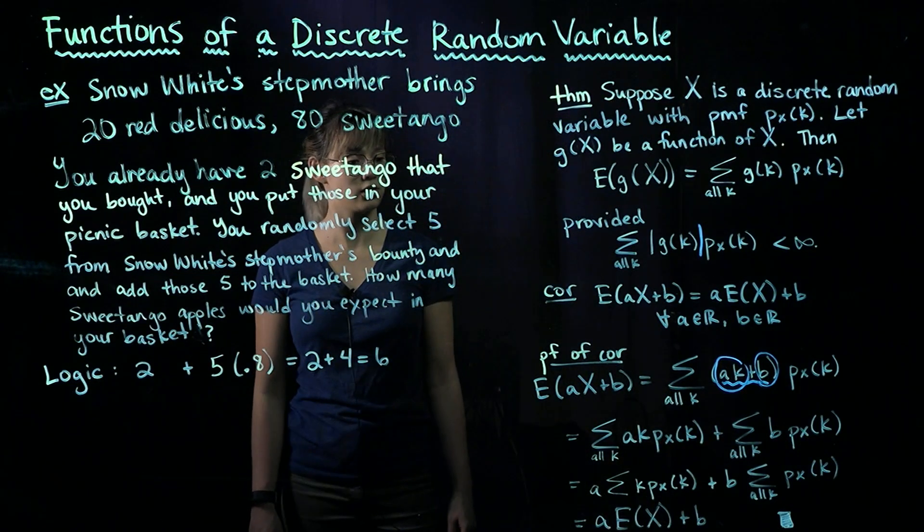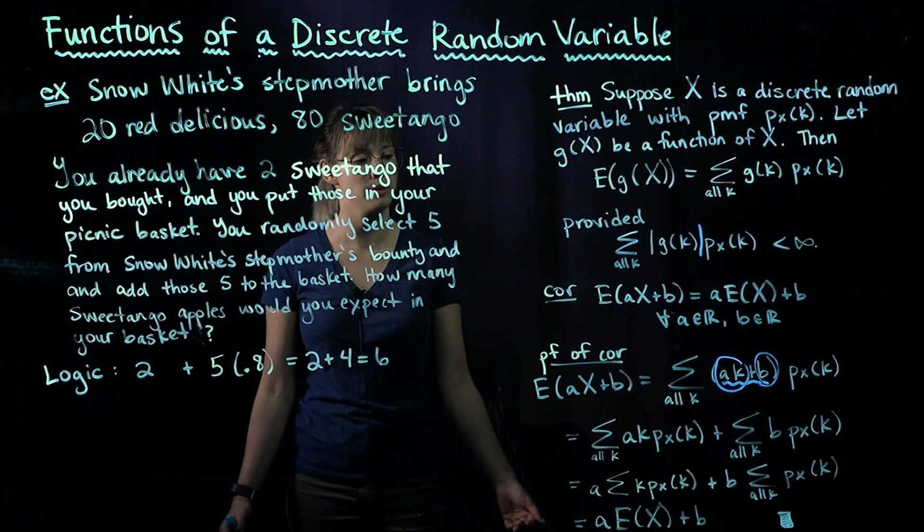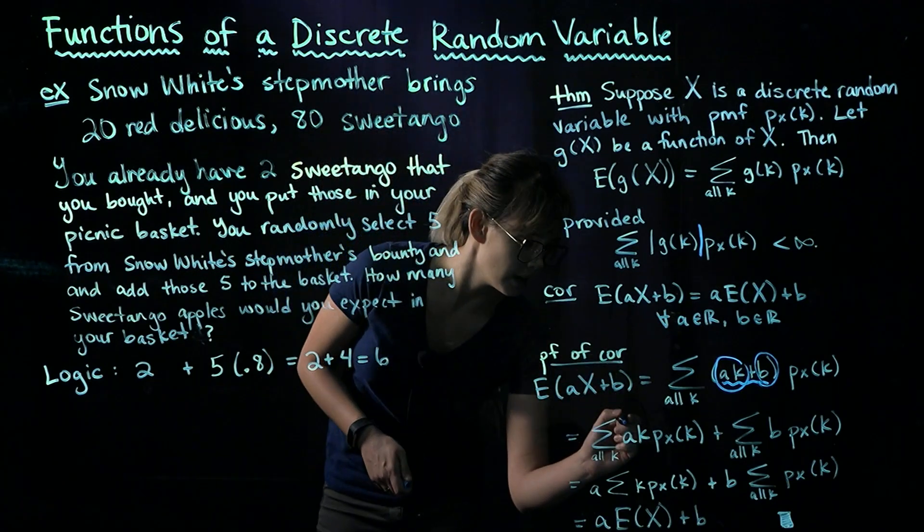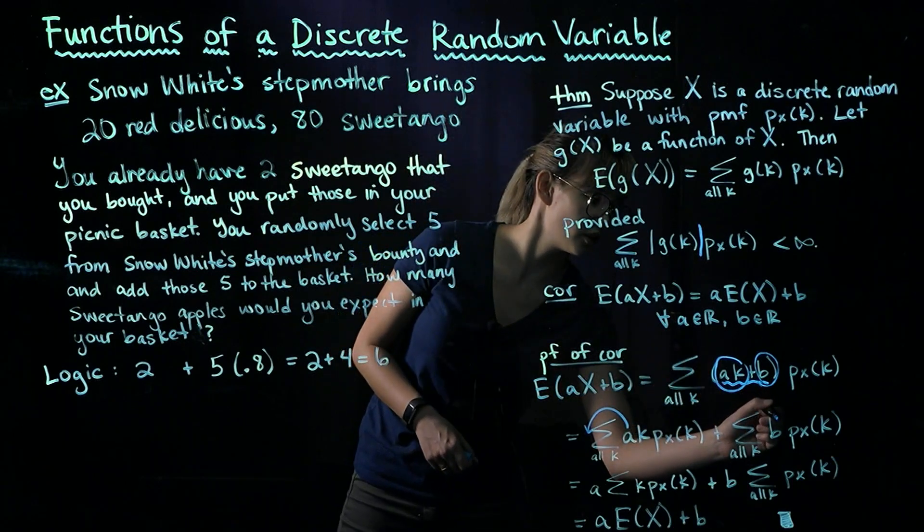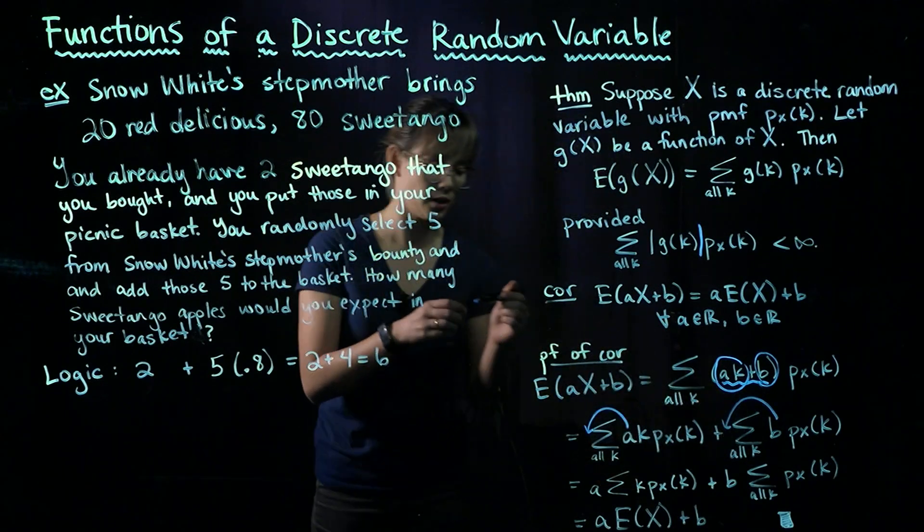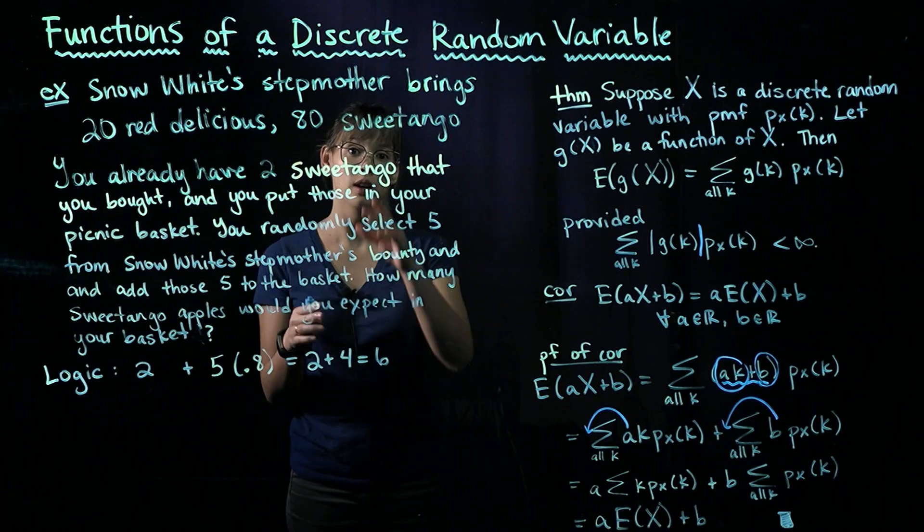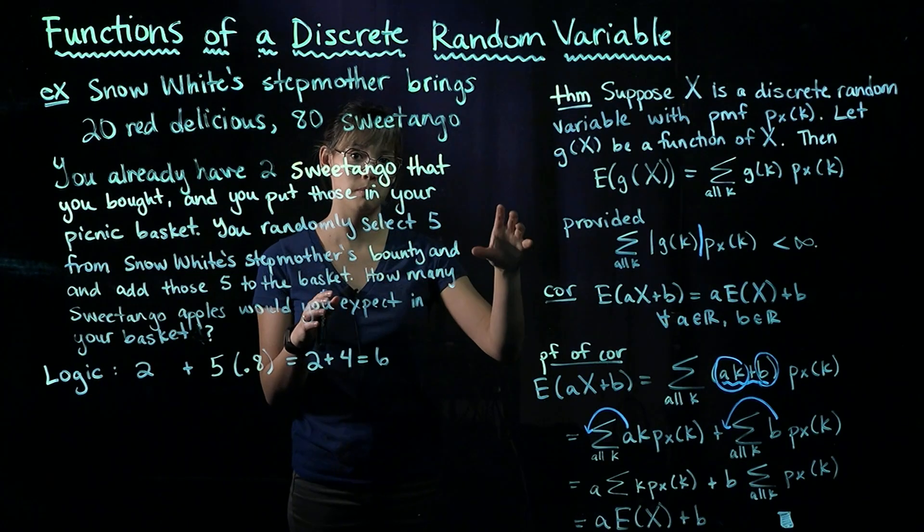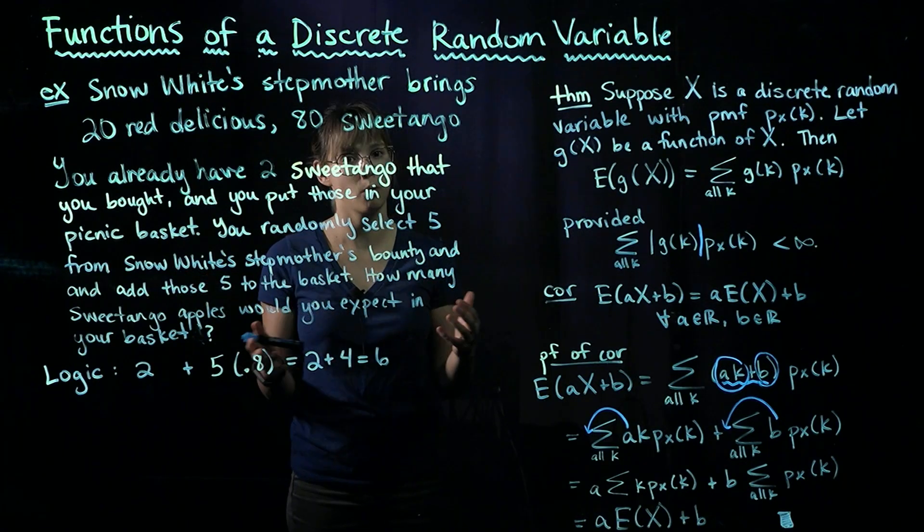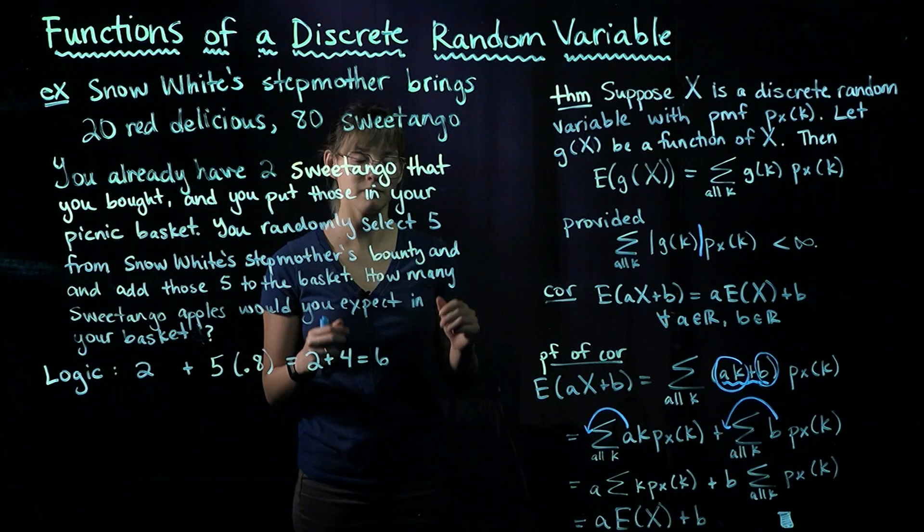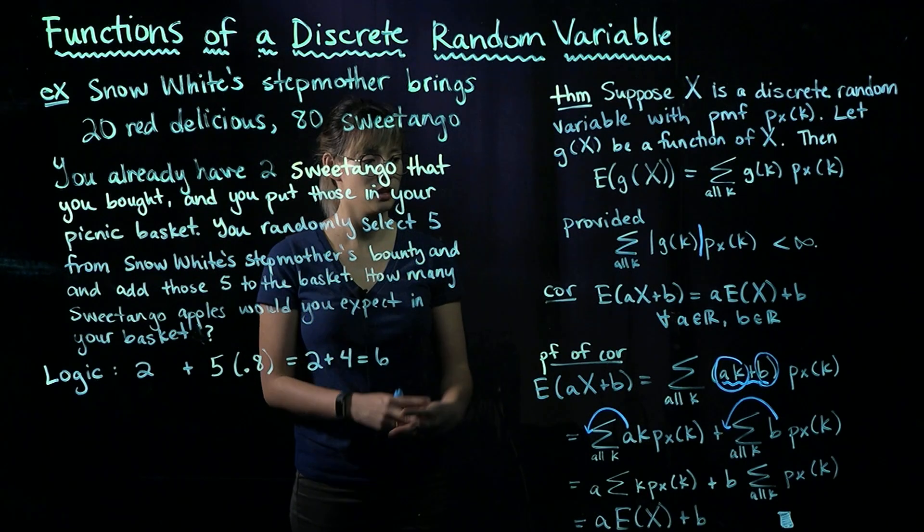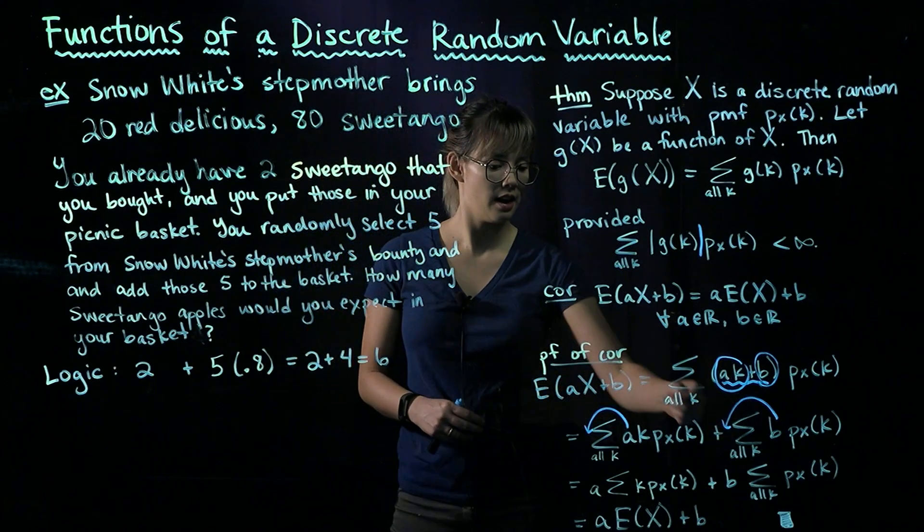Now, since a is just a constant, it's just a real number, and b is just a real number as well, we can scoot a in front, and also we can put b in front. Because we can either multiply each term by a and then sum them all up, or we could sum them all up and then multiply by a. It's going to give us the same thing. So we have scooted out the a and the b.